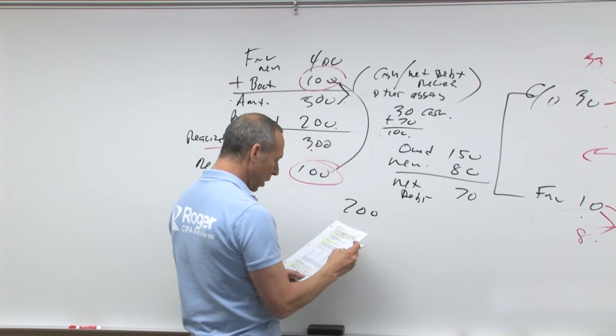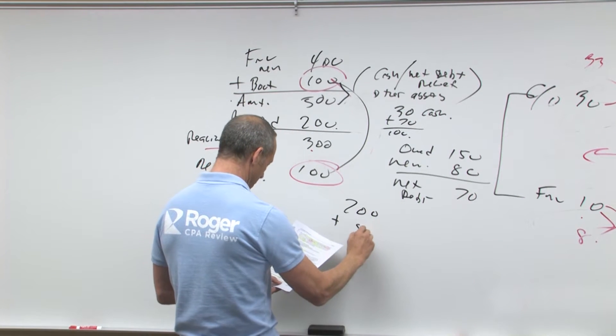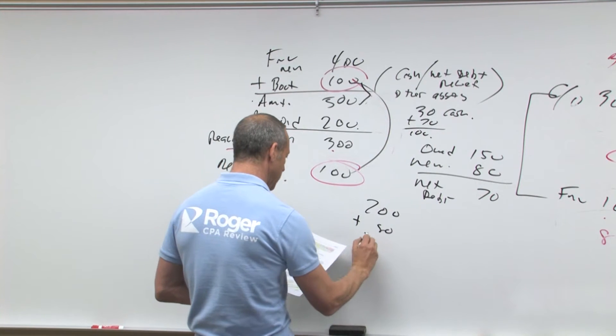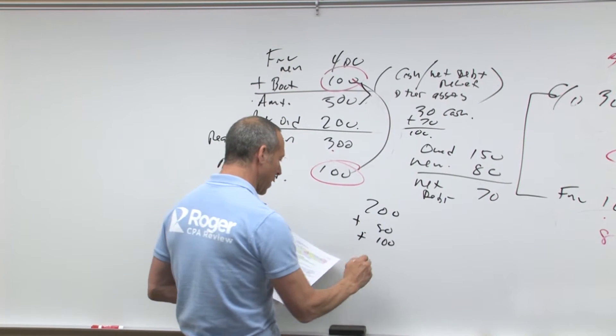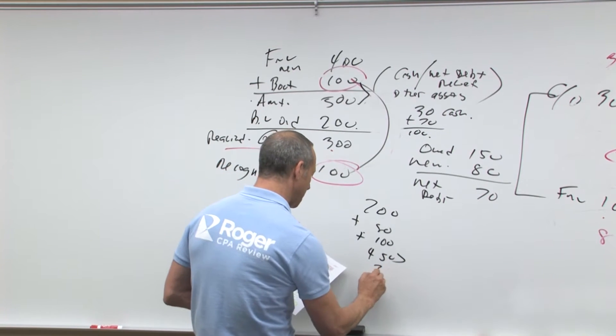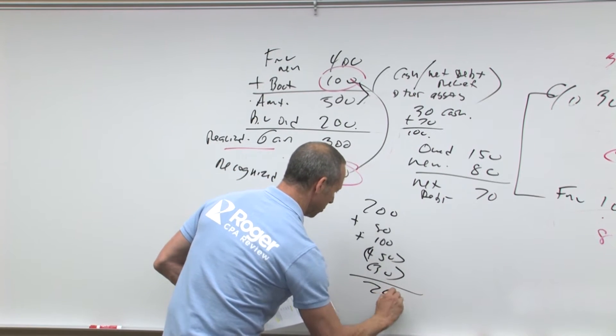Plus the liability assumed, plus the gain recognized, minus the liability of the old, minus the boot received equals 200.